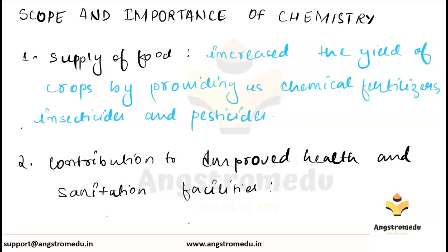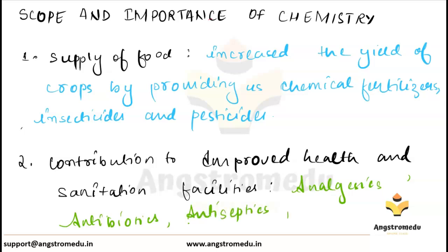We could find the cure for dysentery and other health issues due to the discovery of sulfa drugs and penicillin. Chemistry has provided us with analgesics, which are used to reduce pain; antibiotics, which work against bacteria and other protozoans; antiseptics, which we use on our wounds; and disinfectants, which are used to kill bacteria in our environment.